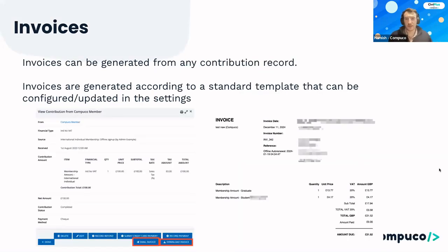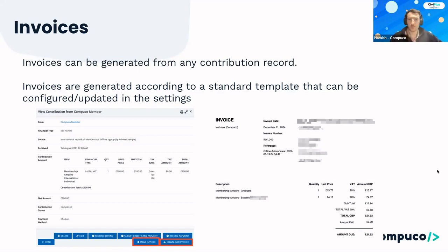From contribution records you can also create and issue invoices. CiviCRM has a great set of tools around generating and sending invoices. Looking at an individual contribution, there are buttons to either email an invoice directly to the member or download a PDF. The generated PDF invoice is based on a template showing key details for that payment — line items, tax, what's outstanding, what's been paid, and if needed, details on how to pay.